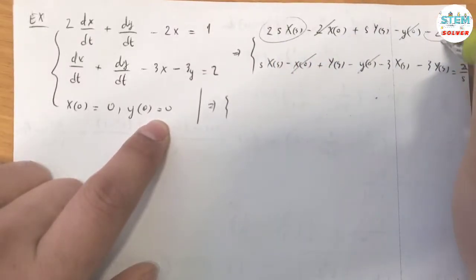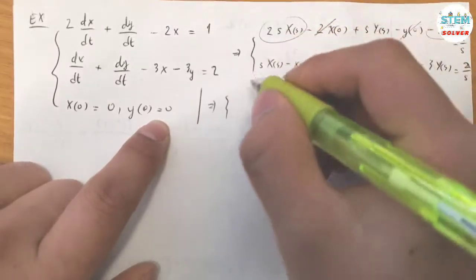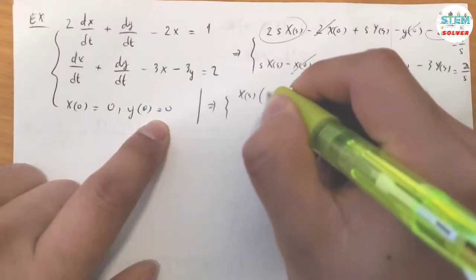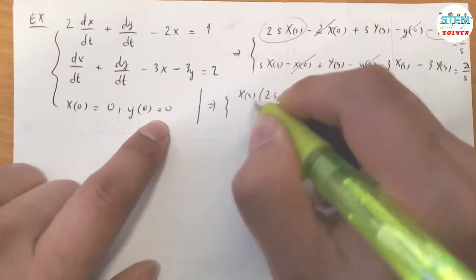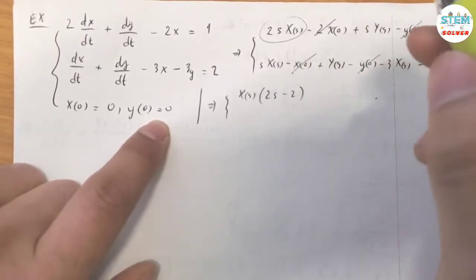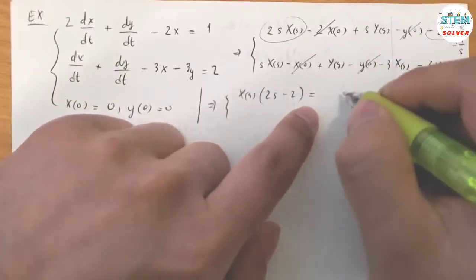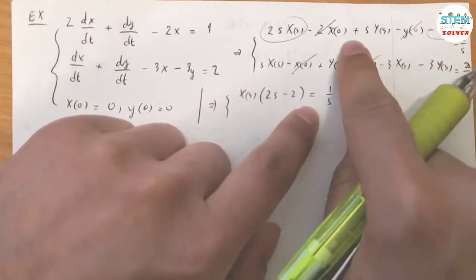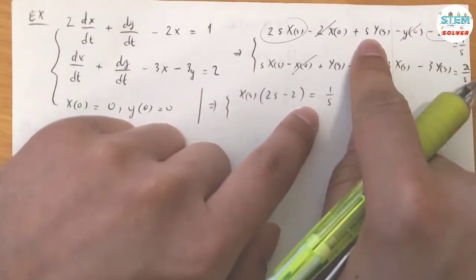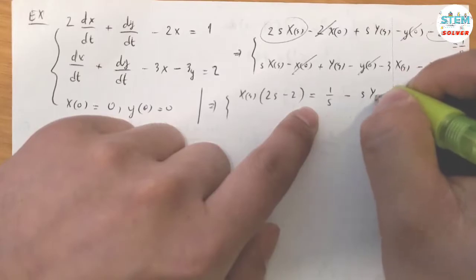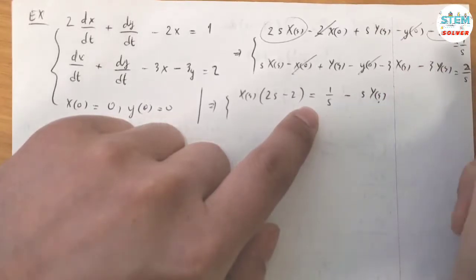Factor out capital X(S) from the first equation. After factoring, we have (2S minus 2)·X(S) equals one over S, which gives X(S) equal to one over S times (2S minus 2), minus Y(S) over (S minus 1).